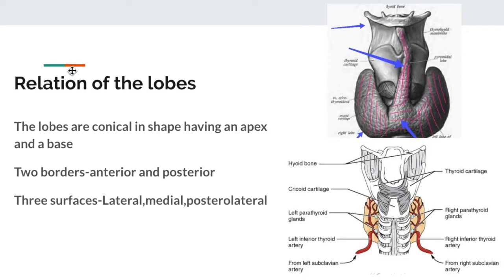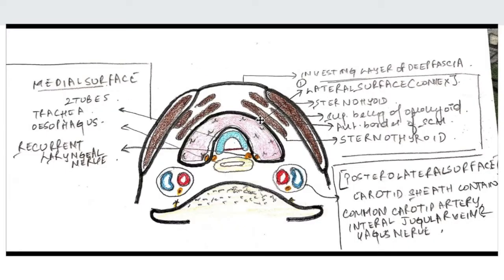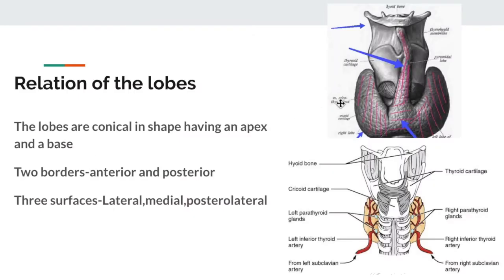Coming to the relations of the lobes: the lobes that form the thyroid gland are conical in shape, having an apex and a base, and they are located anterolaterally. This gives us two borders and three surfaces, which will be discussed in the next video.